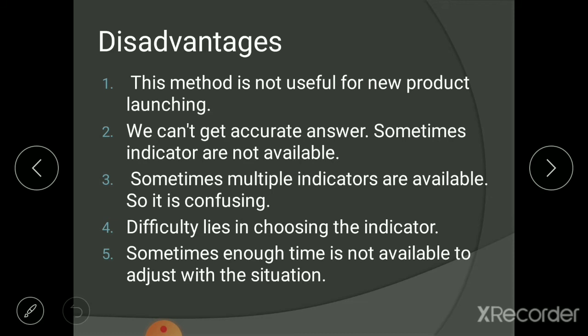The second disadvantage is that we cannot always get an accurate answer because sometimes indicators are not available. For example, if you are a furniture producer, you may not know what indicator to use, or whether one exists. Sometimes the businessman is simply not aware of the relevant indicator, so in those situations they cannot get an accurate answer.